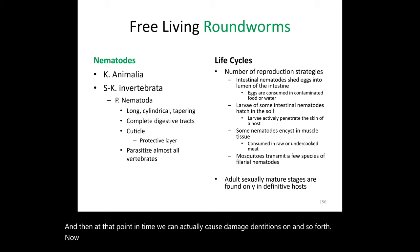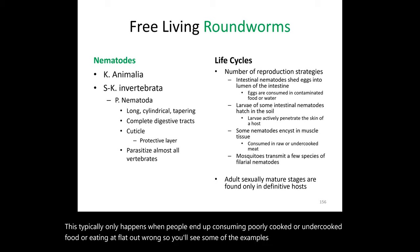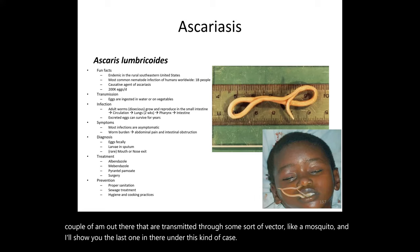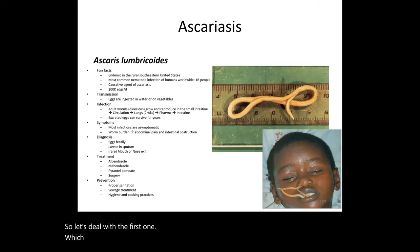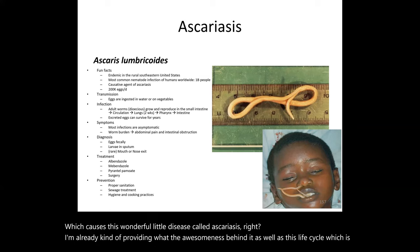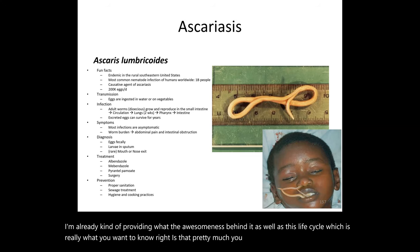This typically happens when people consume poorly cooked, undercooked, or raw food. Some examples are transmitted through a vector like a mosquito. The first one we'll also look at in the lab is Ascaris lumbricoides, which causes the disease Ascariasis. You can find this everywhere — poor areas, poor sanitation, rural areas.